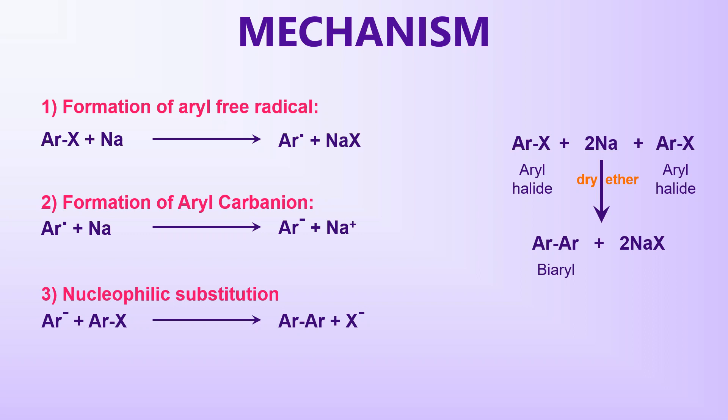Once again, the important steps in the mechanism: the first step is formation of the aryl free radical — sodium metal donates an electron to the aryl halide, leading to heterolytic cleavage of the Ar-X bond and formation of an aryl free radical and a halide ion. The second step involves formation of the aryl carbanion, where another electron is transferred from sodium to the aryl free radical. Finally, in the nucleophilic substitution step, the aryl carbanion displaces the halide group in another aryl halide, yielding a bi-aryl compound.